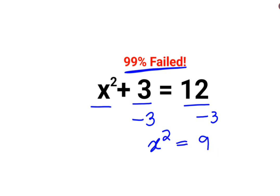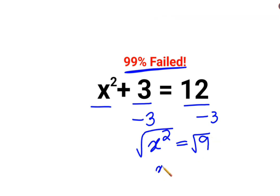Whenever there is a variable with a square and we need to find the value of that variable, we need to take square roots. But since there is a variable involved, when you do the square root, the answer will always come as plus or minus 3. A lot of people thought the answer is supposed to be just 3 — no, in this case it will be plus or minus 3.